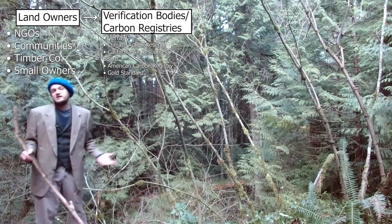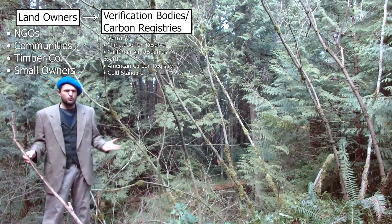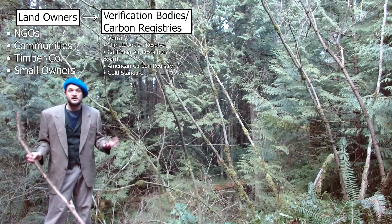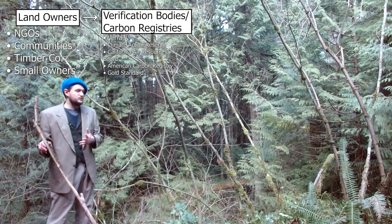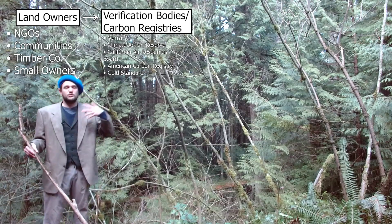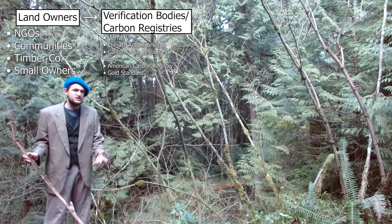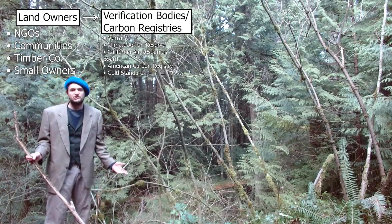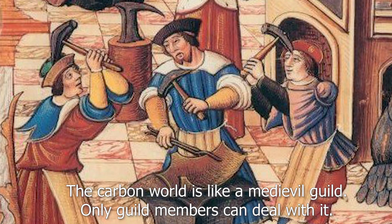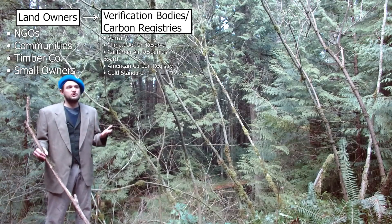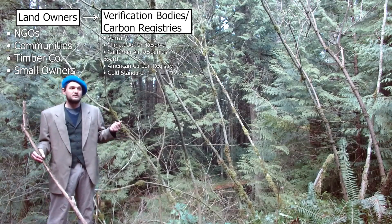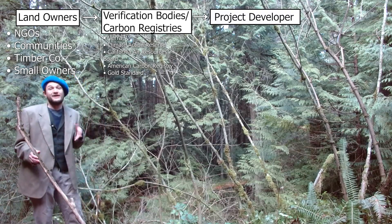The verification bodies have created a set of very complex rules and protocols. They involve creating difficult inventories, mapping out causes of deforestation, and creating maps of hydrology — they're probably too complex. No landowner can actually deal with this set of rules by themselves, so what a landowner does is go to a third-party contractor called a project developer.